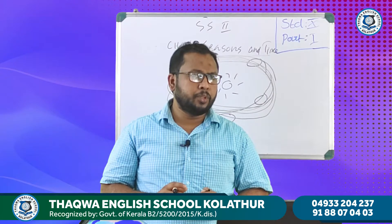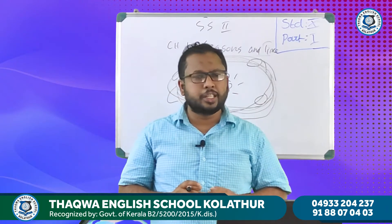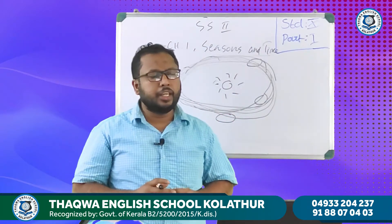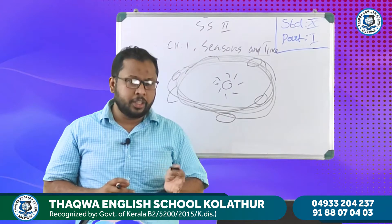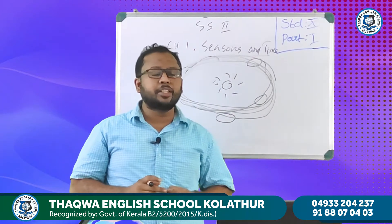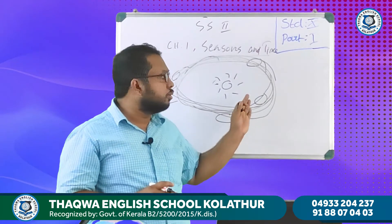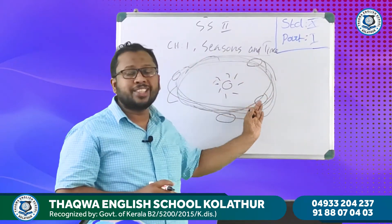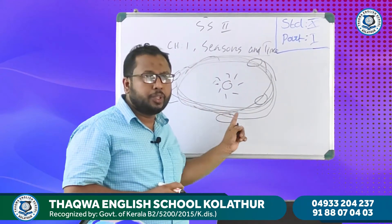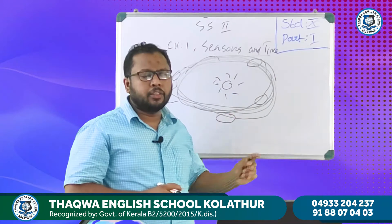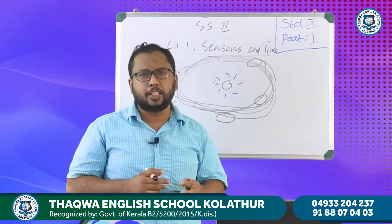The movement of Earth around the sun in an elliptical orbit is known as the revolution of the earth. This revolution is one of the reasons for the variation in the amount of sunshine. The other reason is the tilt of the axis.